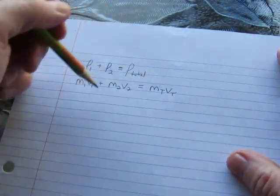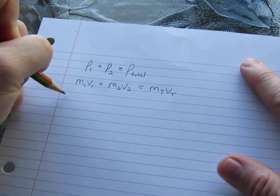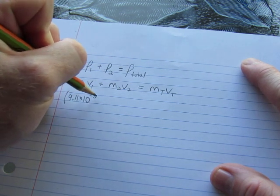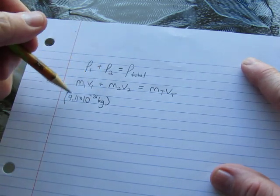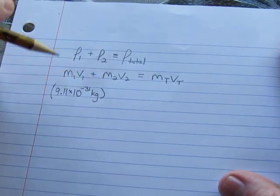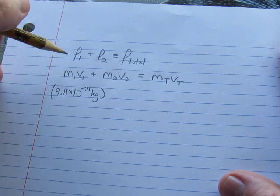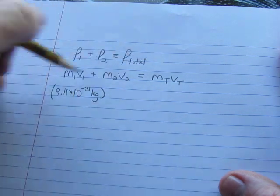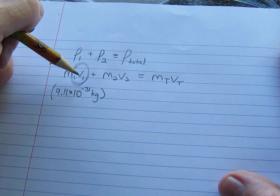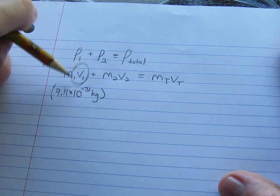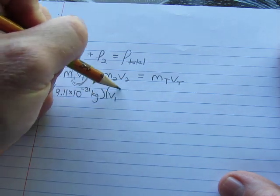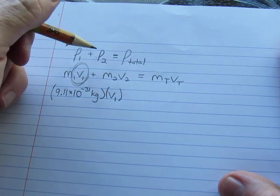When we did one-dimensional momentum everything was adding through the entire formula. After you sub in a formula of mv for each object in this collision. Sorry for being left-handed and blocking everything as I write. The first particle is an electron. We know the mass of this ejected particle, it is an electron.